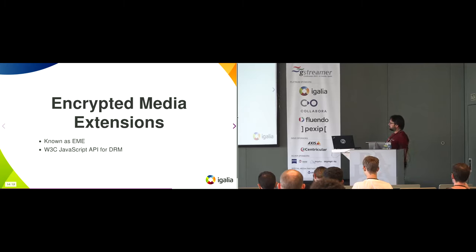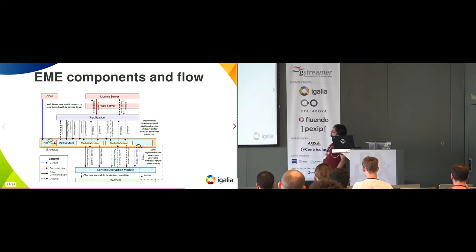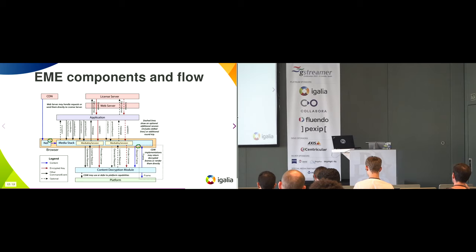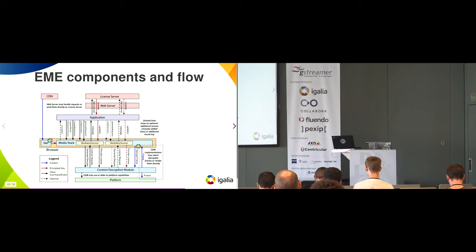Regarding Encrypted Media Extensions, usually known as EME, this is a W3C JavaScript API that provides DRM for the web. You can have different backends. This is the diagram of how EME works. You can have the encrypted event or not — usually the media data comes from the CDN. Do not confuse that CDN with the CDM, the content decryption module. You have the web server, the license server, and the web application. You can put data into the system in two ways: regular playback, or using MSE to feed data into the HTML media element.